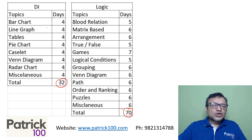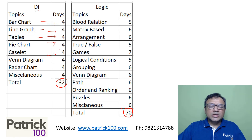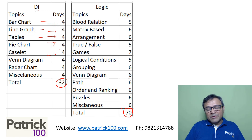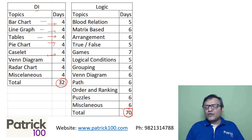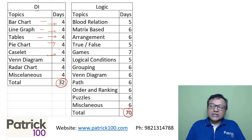For each topic in DLR — for example, bar chart, line chart, tables — I have given you the number of days that you need to practice, approximately. You can change it based on your comfort level. If you feel comfortable with a topic, you can move ahead. If you feel you are not comfortable, then give more number of days. But try to maintain a schedule as far as possible.